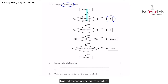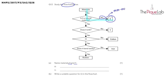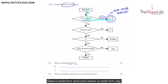Natural means obtained from nature, like from plants, animals, or obtained from the ground. The flowchart shows that X is not a natural material, which means X must be a man-made material. Some examples of man-made materials are glass or ceramic. Glass is made from sand and ceramic is made from clay. So let's write down glass or ceramic.